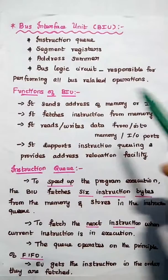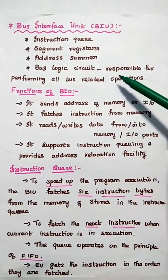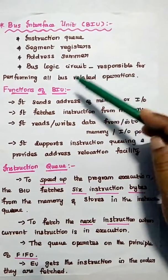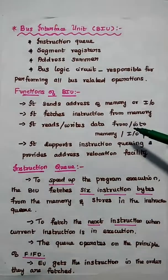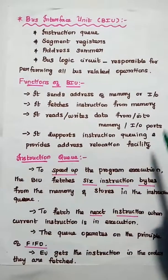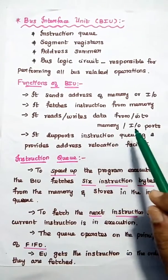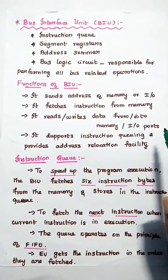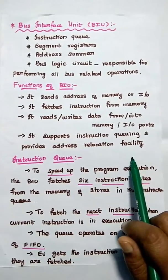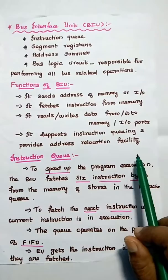The Bus Interface Unit has the following components: instruction queue, segment registers, address summer, and bus logic circuit. The bus logic circuit is responsible for performing all bus-related operations, meaning connecting the devices. The important functions of the BIU are: it sends the address of memory as well as input/output ports; it fetches instructions from memory; it reads and writes data from or into memory as well as input/output ports; it supports instruction queuing; and it provides address relocation facility, which is very important in the case of jump and call instructions.